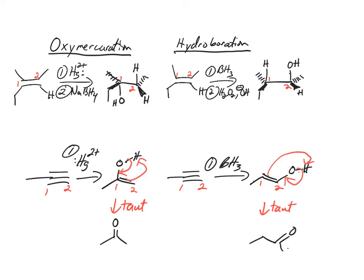Following tautomerization we end up with an aldehyde. It's an important difference. With oxymercuration we get an alcohol on the more substituted carbon - Markovnikov addition - but then it tautomerizes to a ketone. In hydroboration we get the OH added to the less substituted carbon, but then it also...